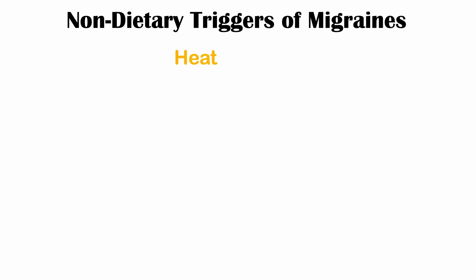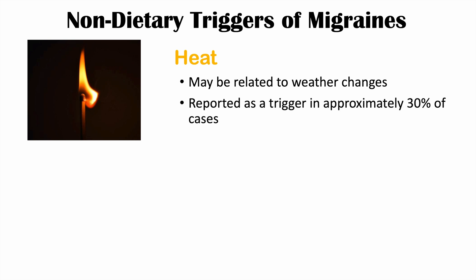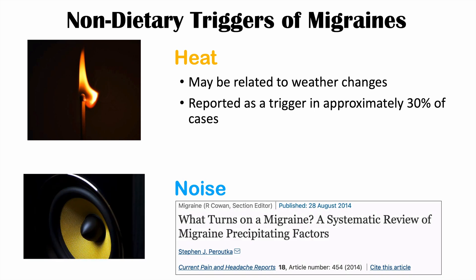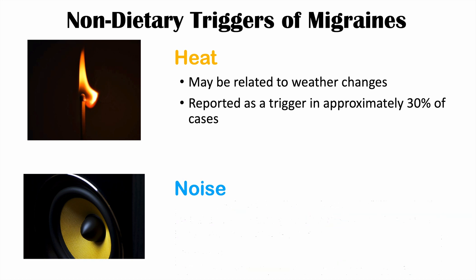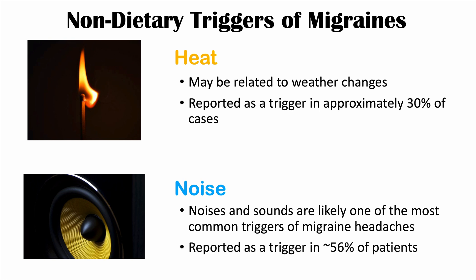Other environmental triggers include heat or excessive heat, which can relate to weather changes — heat is reported as a trigger in approximately 30% of cases. Noise and sounds are also likely one of the most common environmental triggers of migraine headaches, reported as a trigger in roughly 56% of patients. So heat and noise are both important environmental triggers of migraine headaches.